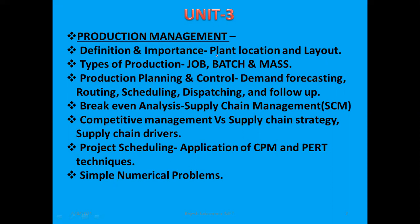The topics to be discussed in Production Management System include: plant location — what is the meaning of plant location or plant layout, what are the factors affecting plant layout, and what are the types of production systems. We have three types: job, batch, and mass production. Next is production planning and control — in every manufacturing firm, production planning should be done including demand forecasting, routing, scheduling, dispatching, and follow-up.